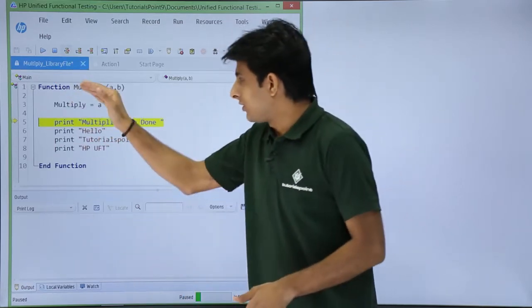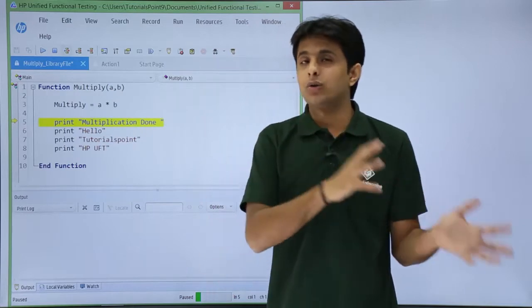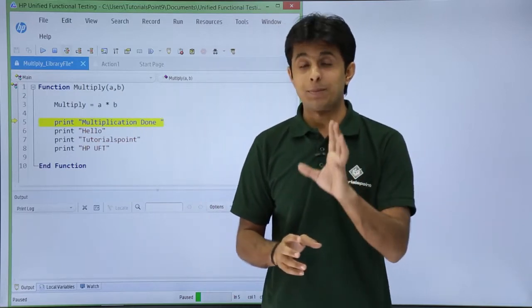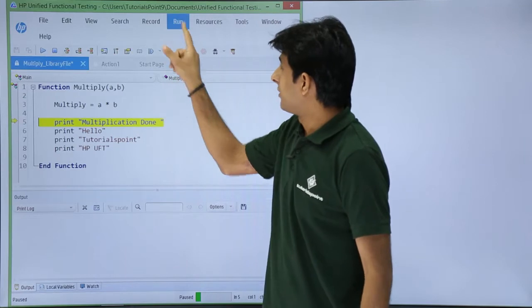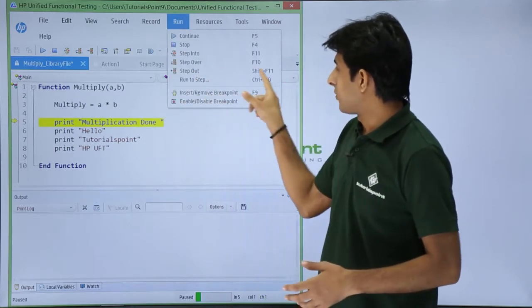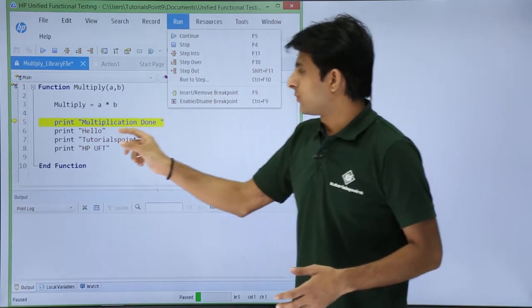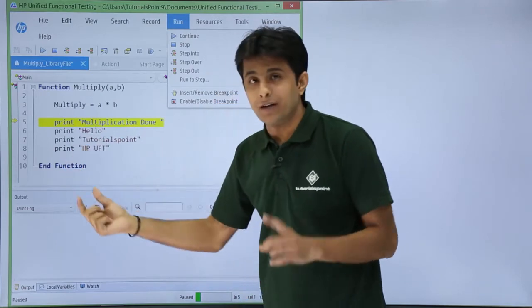Now if I am not interested to see all the steps, I want to come out of this function. There you can use this step out function. I will go to the run menu bar and you see there's a step out, that is Shift F11. This will immediately execute all the statements at one time and come outside the function.